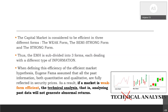All past information, whether quantitative or qualitative, is included in stock prices. As a result, based on past data, an investor would not be able to gain any abnormal or superior returns. Recall that technical analysis assumes past price behavior gives an indication of future stock behavior. However, since Fama assumes all past information is already reflected in prices, there is no point in using technical analysis to predict future market prices. Hence, the weak form of efficiency directly repudiates technical analysis.